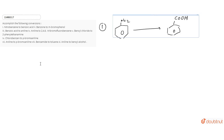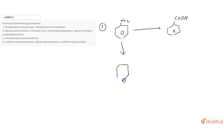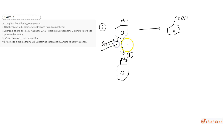In this question we have to make the following conversions. The first conversion is nitrobenzene to benzoic acid. We need to increase one carbon, and for increasing the carbon we will convert it into benzene diazonium salt. This will be done by first converting NO2 into NH2.